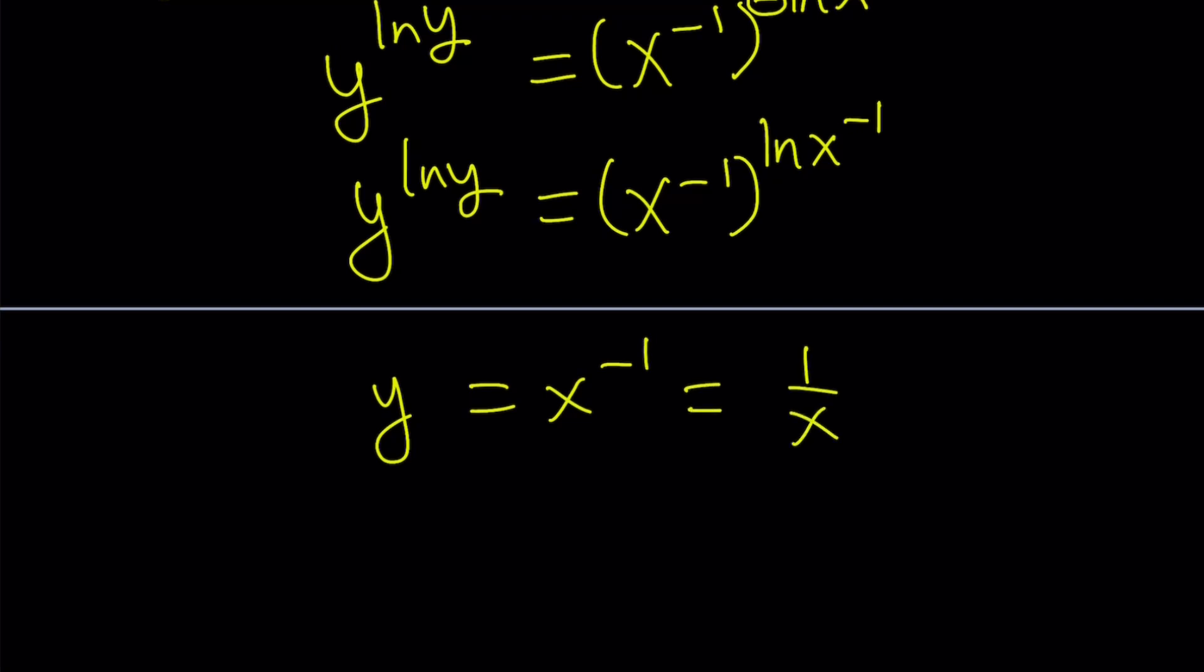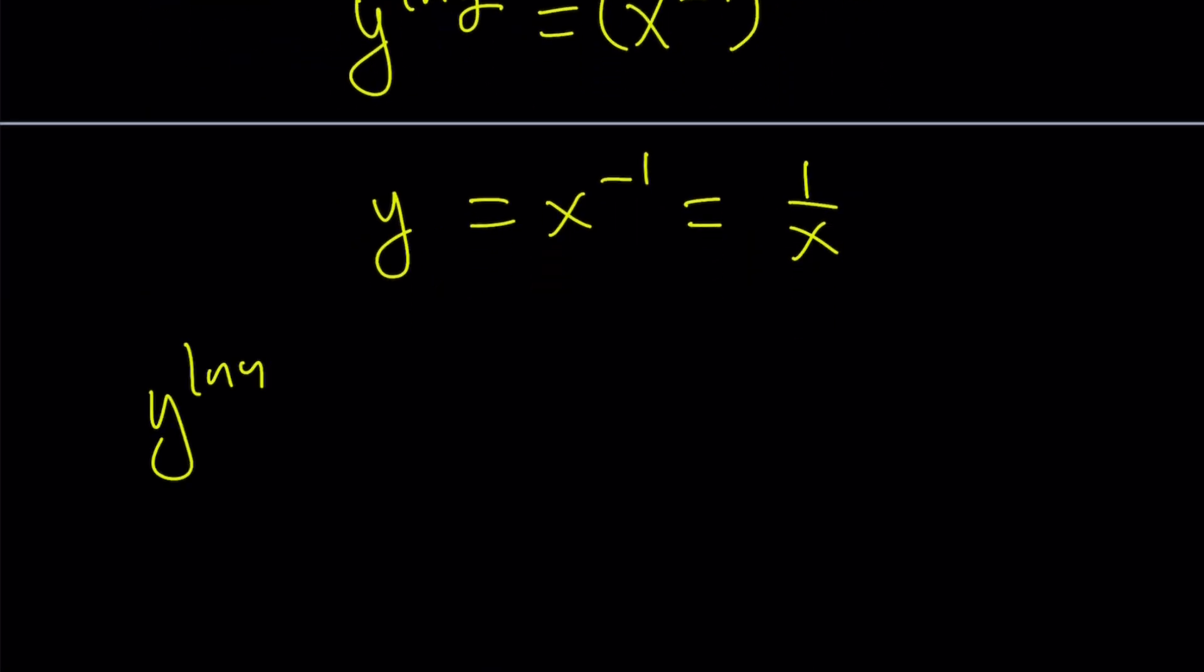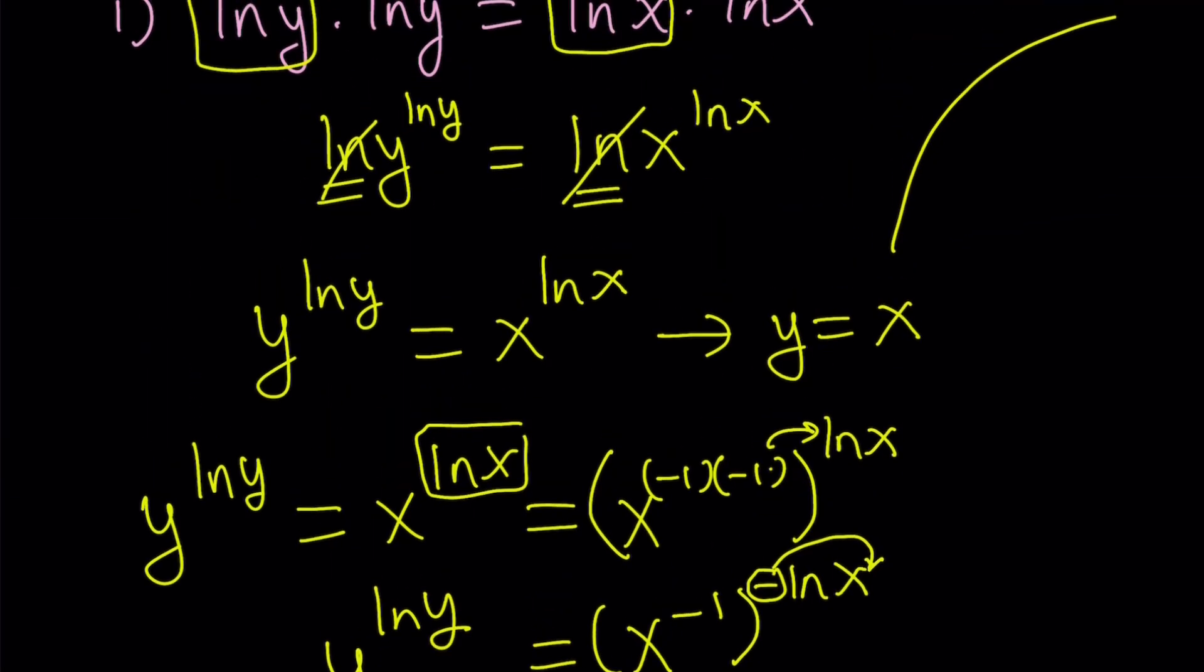So to keep a long story short, y^ln(y) equals x^ln(x) has two solutions. One of them is y equals x. The other one is y equals 1/x. I think we've done a similar problem before. If I find it, I'll share the link down below. Okay, so we got two solutions: y equals x and y equals 1/x. But there's a couple of things we need to look at. And oh, I was going to show you the second way to approach it.